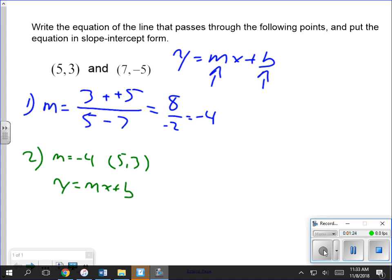So I plug in: y is 3, so I have 3 equals, m is negative 4, times x is 5, plus b.